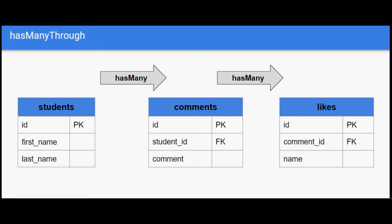We already saw in one of our last videos that a student has many comments, which we refer to as 'recommendation'. Each of these comments has multiple likes. So in order to fetch all the likes for a student, we need to query through the comments table. We could define a has-many-through relationship on the student model which would fetch all the likes.